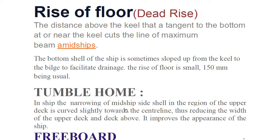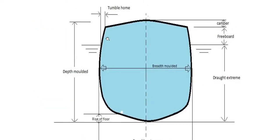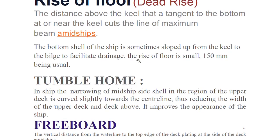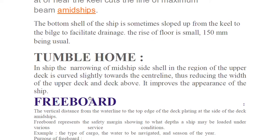Tumble home is the inward curvature above the main draft — always remember it is above the waterline. In a ship, the narrowing of the midship side shell in the region of the upper deck curves slightly towards the centerline, thus reducing the width of the upper deck and decks above it. This also improves the appearance of the ship.